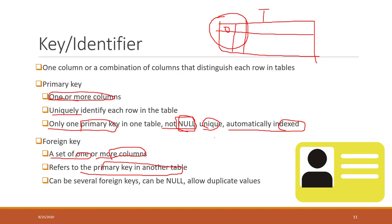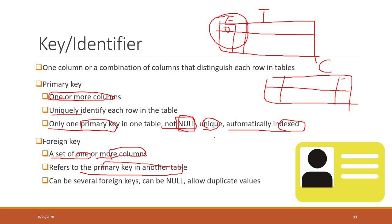For example, this is the teacher table and this is the course table. On the teacher table, we have the teacher email, which is the primary key. In the course table, that column is the foreign key, and the teacher email column on the teacher table is the primary key. So the foreign key is used to refer to the primary key on another table. You can have multiple foreign keys in a table, or you can have zero foreign keys.